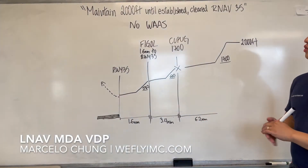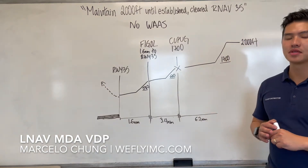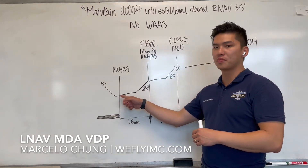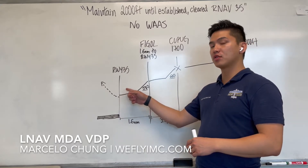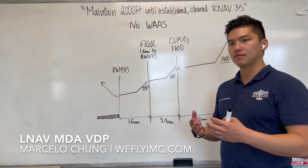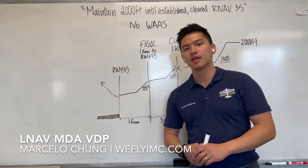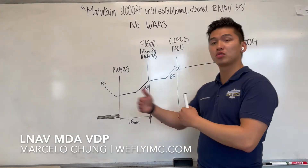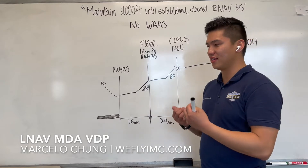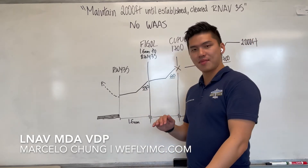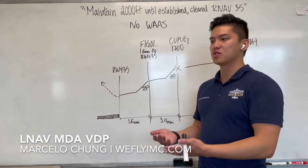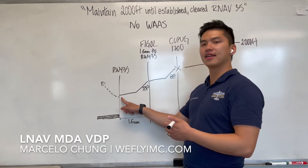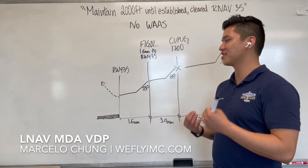If you're flying without WAAS down to your LNAV MDA minimums, legally you can maintain 580 feet until you've reached the missed approach point. If you see the runway at the missed approach point at 580 feet MSL, legally you can descend and land. But sometimes your airplane is too fast, sometimes the runway is too short, so when you see the runway at 580 feet MSL, you may be too high. There's a big chance you might not be able to make that landing even if you're legally allowed to.